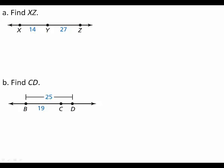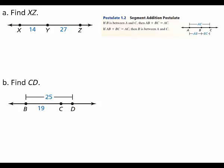Find the length of segment XZ, and find the length of segment CD. To find the length of segment XZ and segment CD, you can use the Segment Addition Postulate. This postulate states that if B is between A and C, then the length of segment AB plus the length of segment BC equals the length of segment AC.